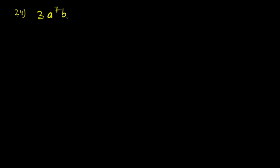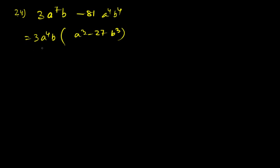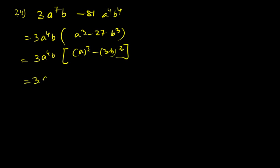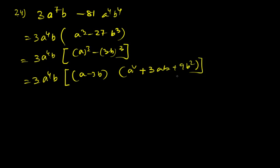Question 24: 3a⁷b – 81a⁴b⁴. Taking 3a⁴b common, we get 3a⁴b(a³ – 27b³) = 3a⁴b(a – 3b)(a² + 3ab + 9b²).